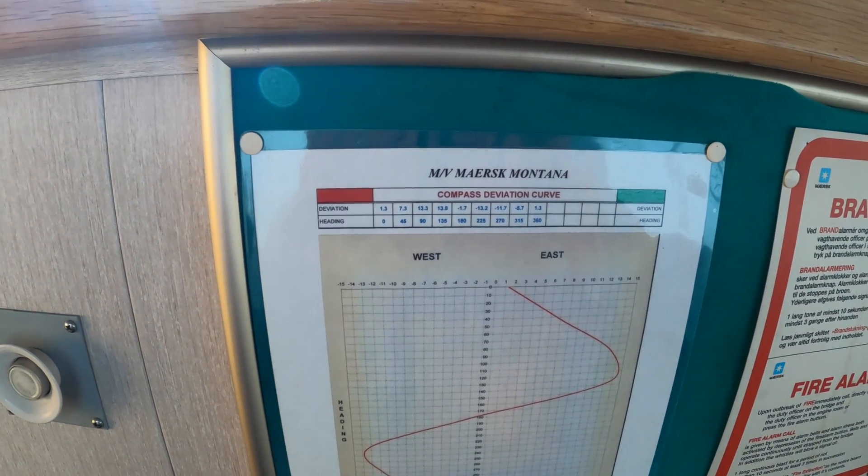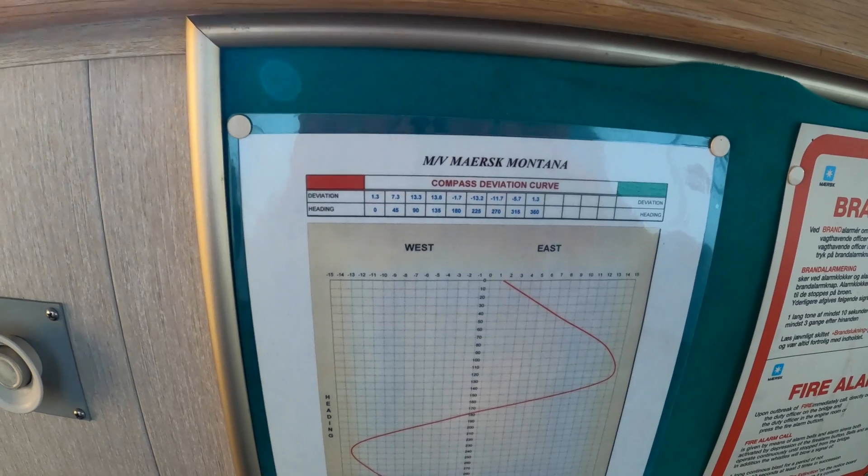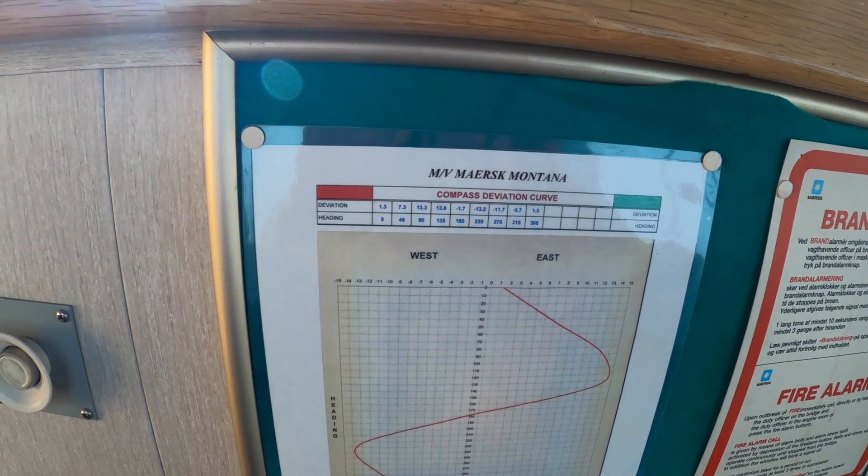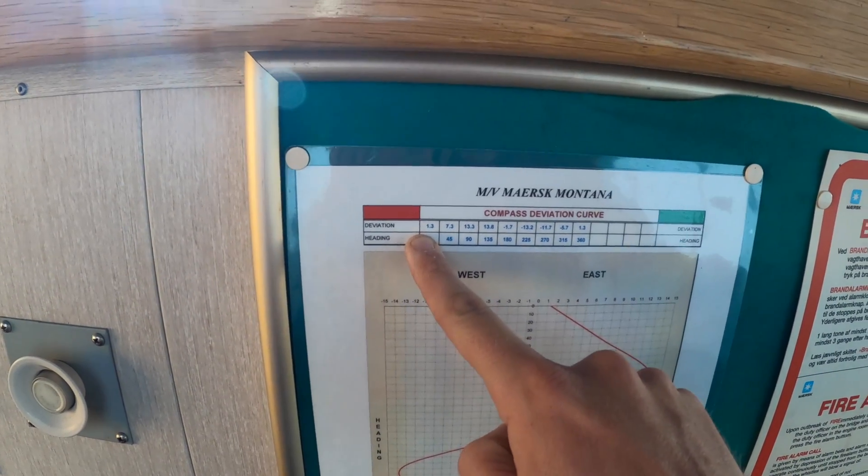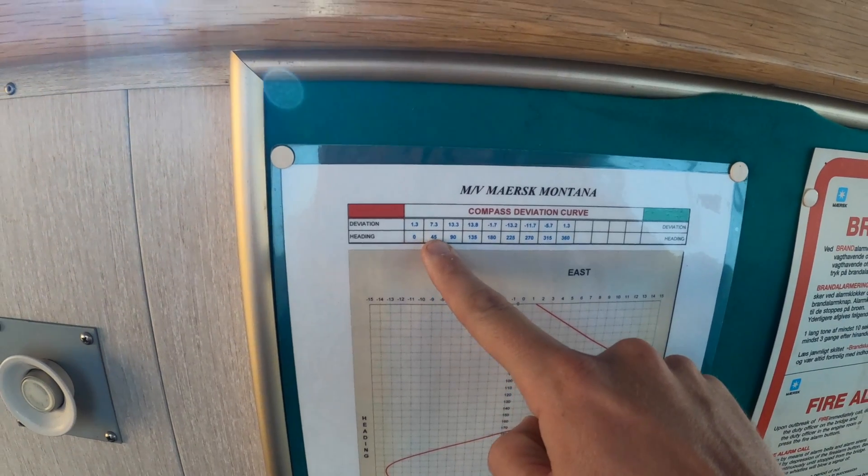This deviation table is created on an annual basis when they swing the ship in a full circle and they record the deviation based on different cardinal points and intercardinal points.